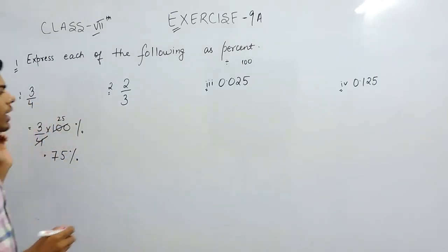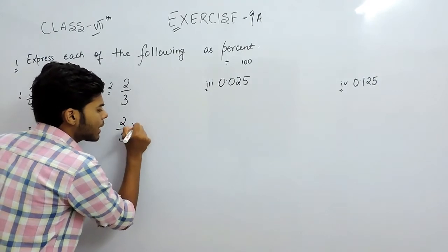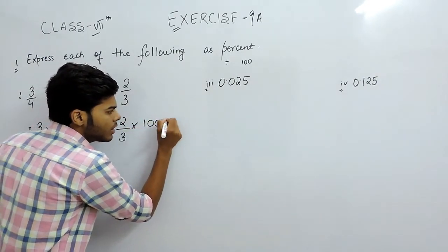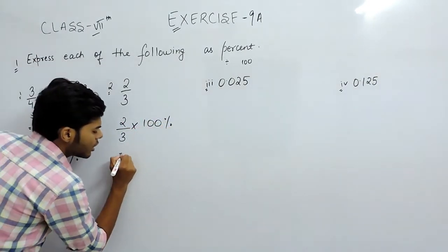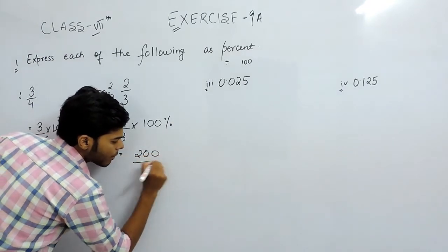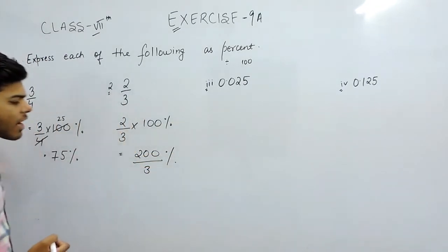In this one, we again multiply with 100 percent. 2/3 multiplied with 100 percent will be 200/3 percent, or as a mixed fraction, we can write this as 66 and 2/3 percent.